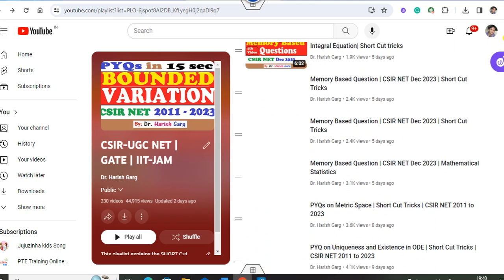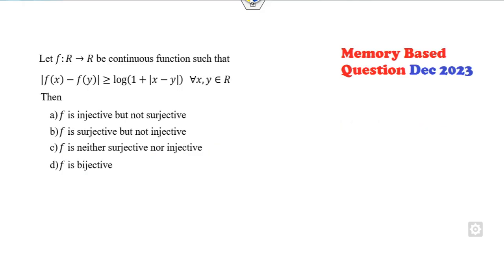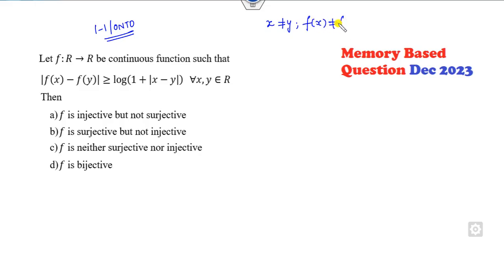Now read this statement very carefully — they are asking whether the function is injective or surjective, that means 1-1 and onto. It's a very simple question. The meaning of 1-1 is: if X is not equal to Y, then F(X) must not equal F(Y). Equivalently, if F(X) equals F(Y), then your goal is to prove X equals Y.